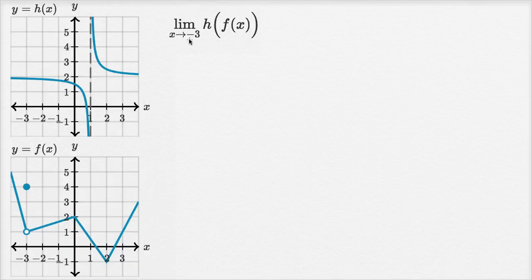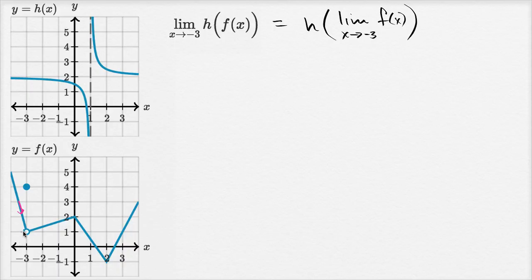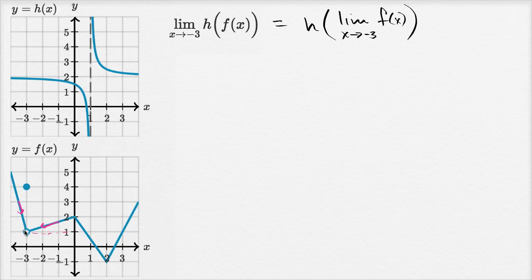We have the limit of h of f of x as x approaches negative three. This is equal to h of the limit as x approaches negative three of f of x. Looking at the graph y equals f of x, as we approach negative three from the left, it looks like we are approaching the value of one. And as we approach from the right hand side, it also looks like we are approaching one. So this limit equals one.